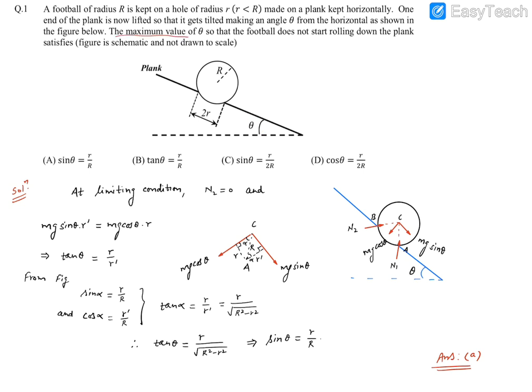The maximum value of theta so that the football does not start rolling down the plank satisfies which of the following condition. So we need to find the maximum value of theta so that it does not slide or start rolling downside.